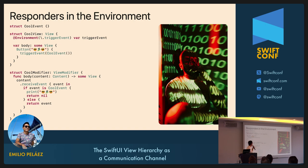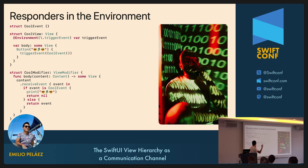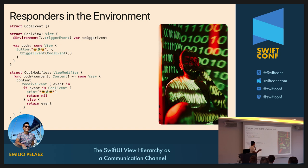How would this look in use? We define our event as a struct. In the view where we want to trigger the event, we observe the environment event value. Whenever an event happens — say when we press a button — we call that function and it sends the event up the view hierarchy. Then we create a modifier that receives all events; if it finds the event is a 'cool event', it prints something to the console and returns nil, consuming the event. If the event is anything else, the same event is returned and keeps going up the view hierarchy.